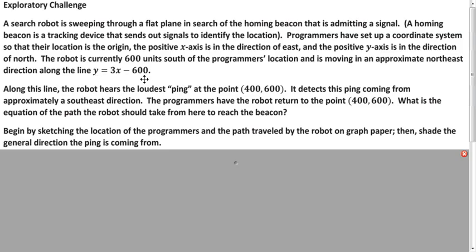The robot hears the loudest ping from the homing beacon at the point (400, 600), and it hears it from the southeast direction. So what we want to do is model the situation on the Cartesian plane and shade the area that we believe the robot should travel to find the homing beacon. Why don't you try to graph this line and shade the area you believe the robot should go in to find that beacon.